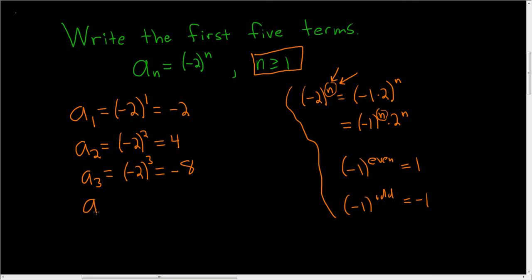A sub 4 is negative 2 to the 4th. That's even, so we'll get a positive answer. Why? Because you can do this and then you get negative 1 to the 4th, which is 1 because 4 is even.